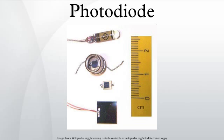Applications: PN photodiodes are used in similar applications to other photodetectors, such as photoconductors, charge-coupled devices, and photomultiplier tubes. They may be used to generate an output which is dependent upon the illumination or to change the state of circuitry.